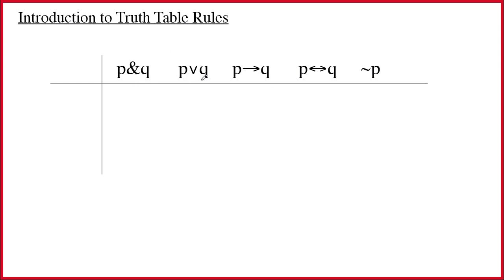Here I have a table. I have listed all five of our connectives and associated them with the P's and Q's which stand in for all of the possible uppercase letters. Let me put P and Q over here and point out that what we're going to do on this table is explain each one of our connectives as a rule that operates on the values that P and Q could have.